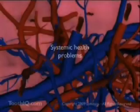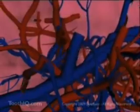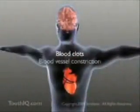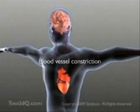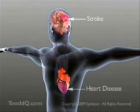Periodontal bacteria can enter the body's circulatory system through leaky blood vessels. Once inside, the bacteria can lead to blood clots and inflamed vessels, which constrict in diameter, leading to strokes, heart disease, heart attacks, and poor circulation in the extremities.